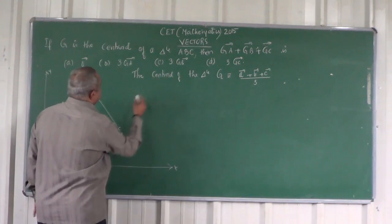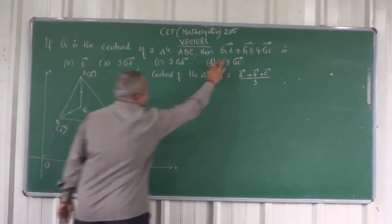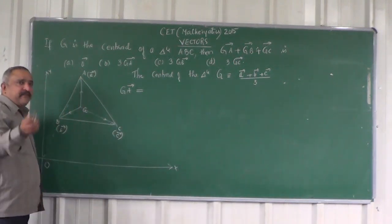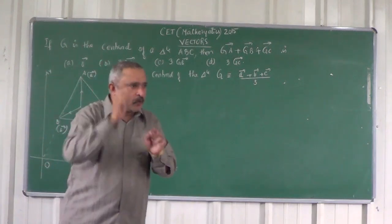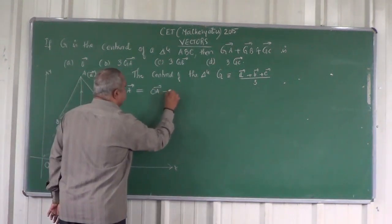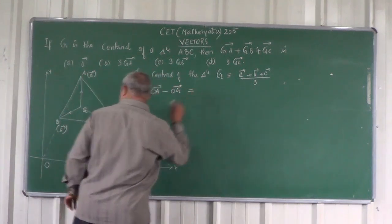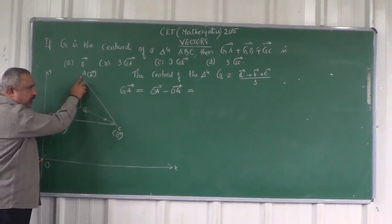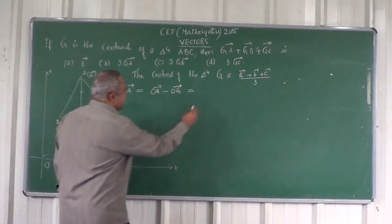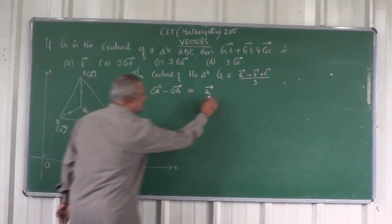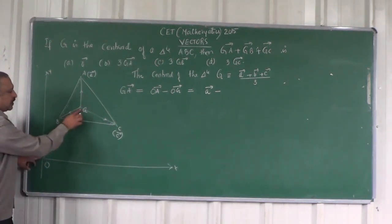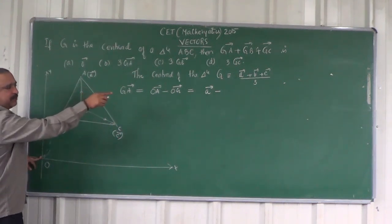Now let us consider vector GA. Any vector, say BQ, can be expressed as OD minus OC. In the same way, vector GA can be expressed as vector OA minus vector OG. Vector OA is the position vector of A. What is vector OG — the position vector of G? It is (A plus B plus C) divided by 3.